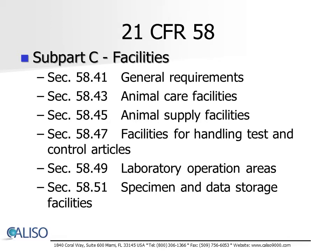Subpart C, Facilities. This section details the requirements for the various types of facilities that might facilitate a study and includes General Requirements, Animal Care Facilities, Animal Supply Facilities, Facilities for Handling Test and Control Articles, Laboratory Operation Areas, and Specimen and Data Storage Facilities.